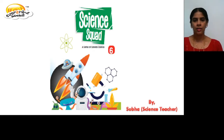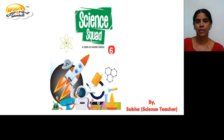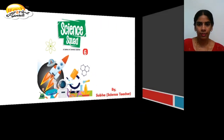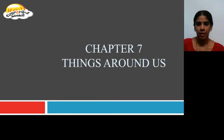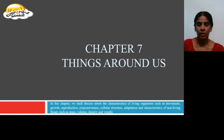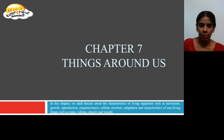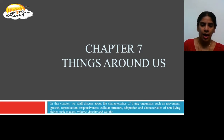Hello students, let us learn general science for class 6 from the book Science Quack. Let us learn chapter 7, Things Around Us. In this chapter, we shall discuss about characteristics of living organisms such as movement, growth, reproduction, responsiveness, cellular structure, adaptation, and also about the characteristics of non-living things such as mass, volume, density and weight.